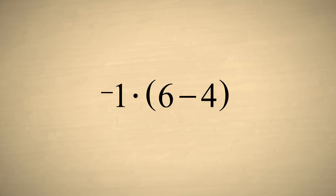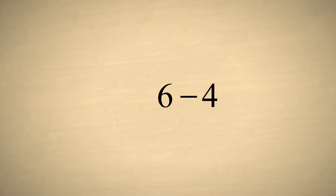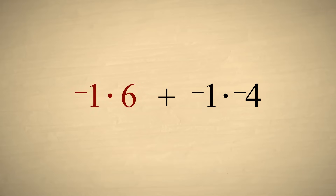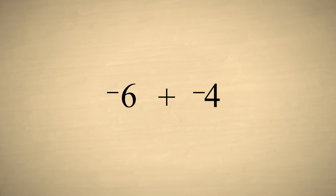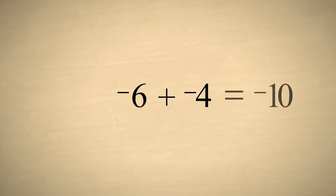But instead, let's say that we use the distributive property and multiply negative 1 times each number in the parentheses separately. We then have negative 1 times 6 plus negative 1 times negative 4. We know that negative 1 times 6 is negative 6. But we don't know what sign the product should be when we multiply two negative numbers. Is negative 1 times negative 4 equal to negative 4 or positive 4? Let's try both possibilities. If we assume that multiplying two negative numbers results in a negative product, then we end up adding negative 4 to negative 6, which equals negative 10.